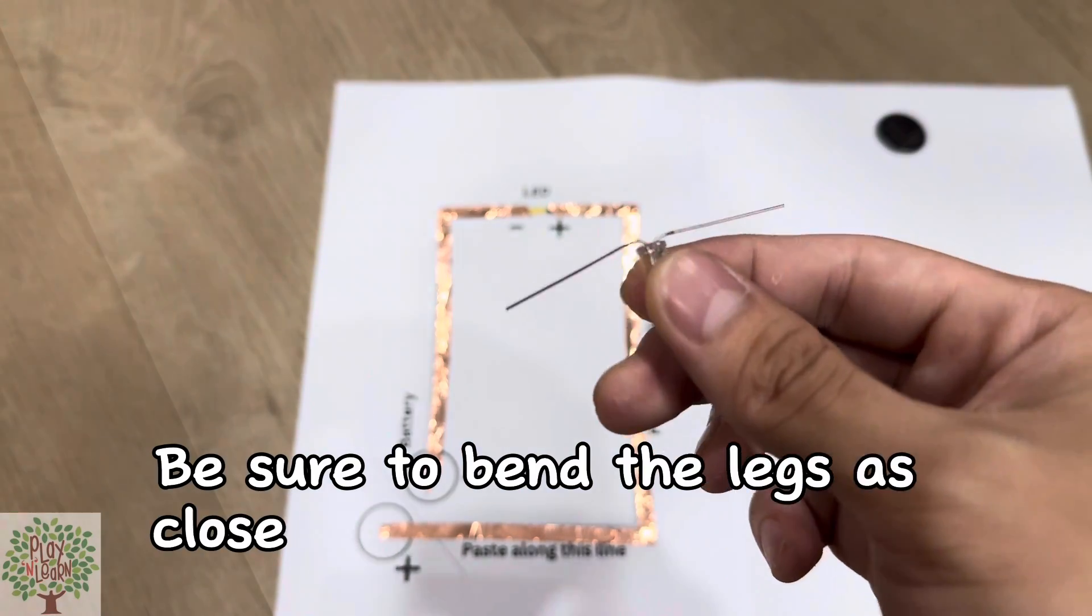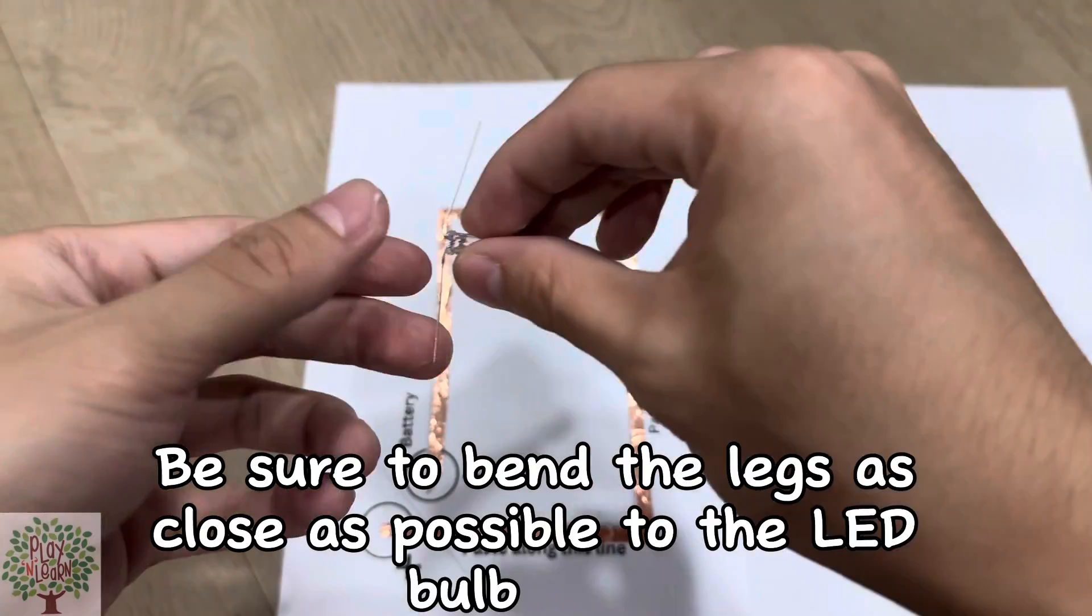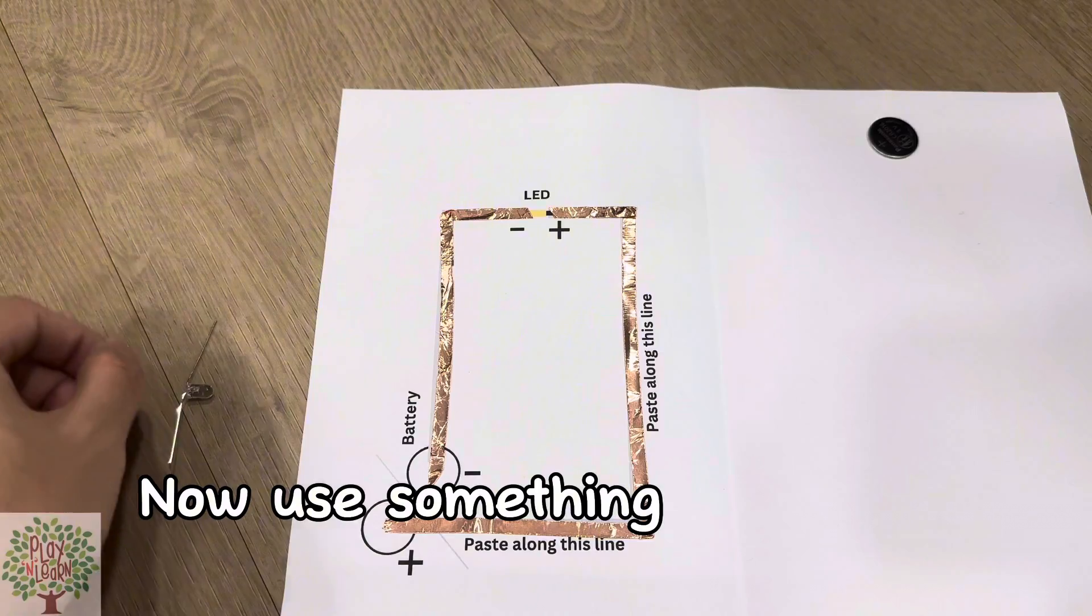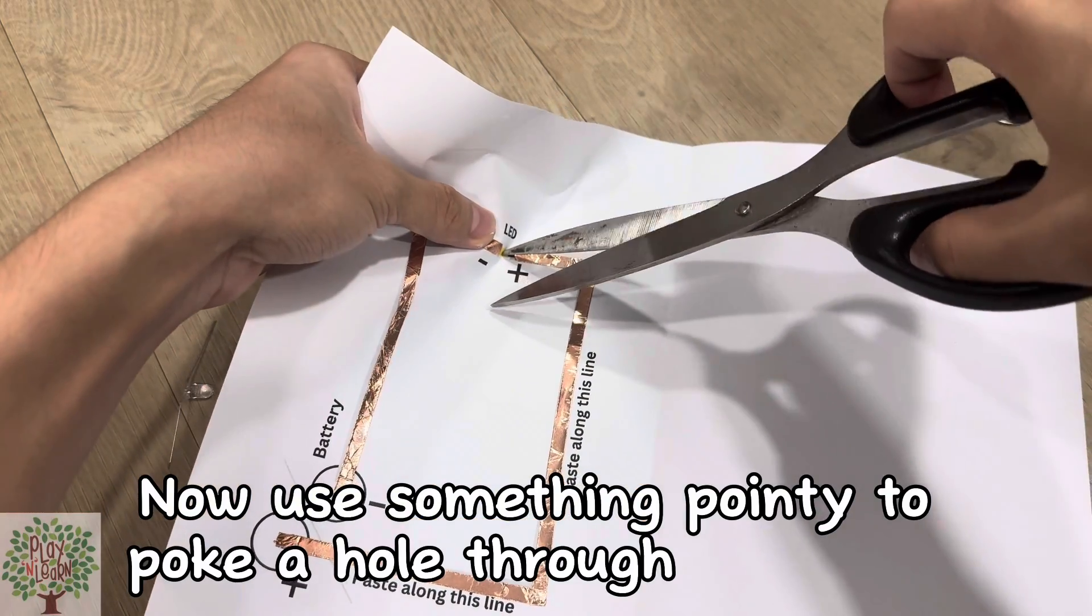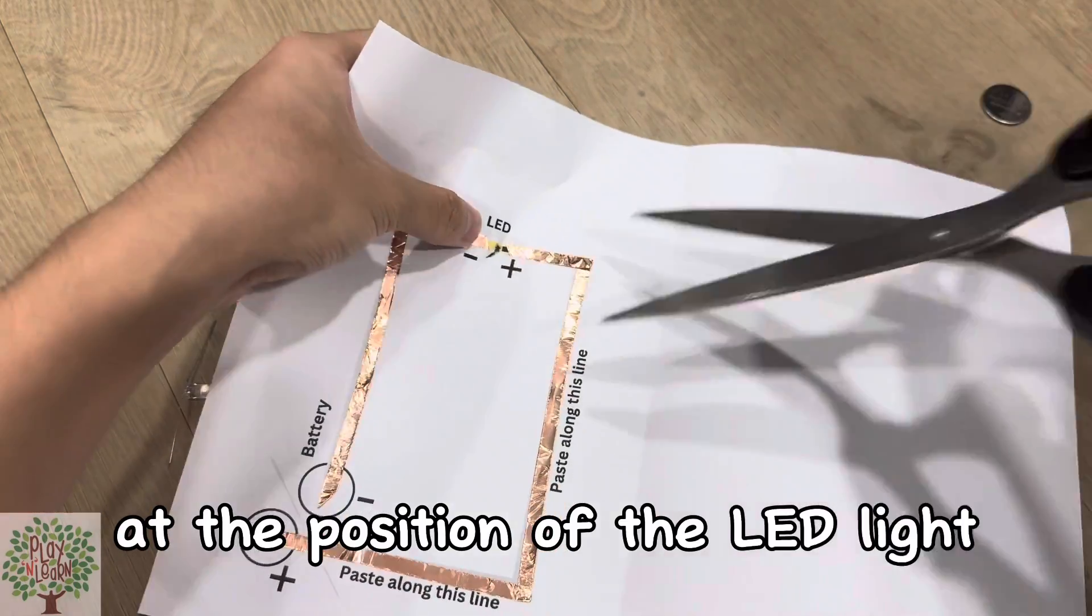Be sure to bend the legs as close as possible to the LED bulb itself. Now use something pointy to poke a hole through the paper at the position of the LED light.